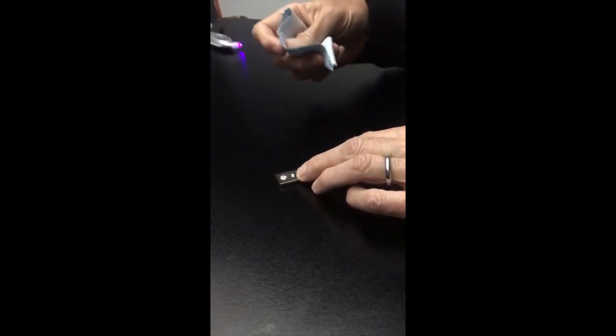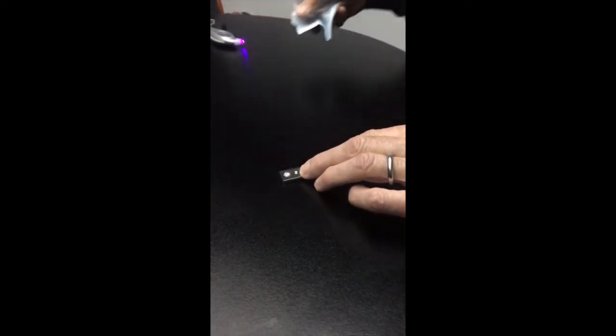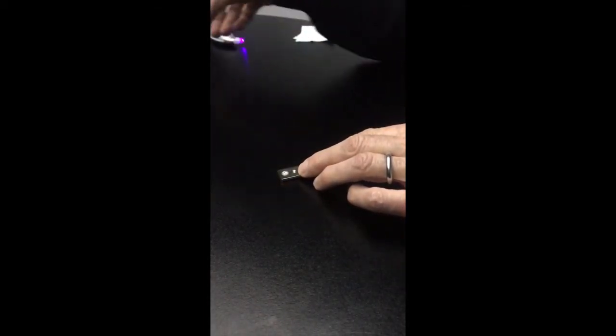When identifying the stone with the tester, it's first important that you wipe down and remove any body oil that may be present on the stone's table.